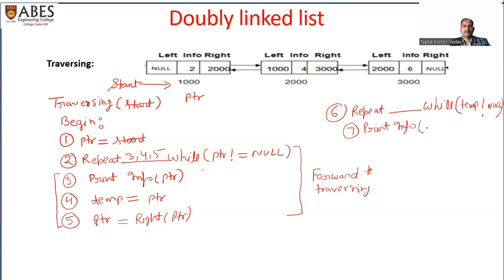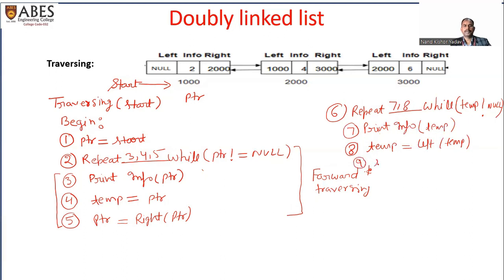In step seven, we print info of temp. In step eight, temp is equal to left of temp — using this step we can move from the last node to the second-last node, then to the third-last node, up to the first node. We repeat steps seven and eight. In step nine, we stop the algorithm. Using these three steps we complete the backward traversal.